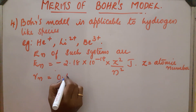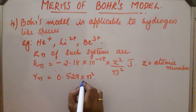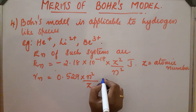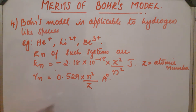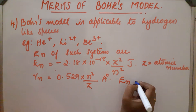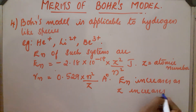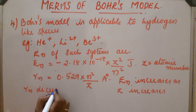Rn will be equal to 0.529 × N² / Z Angstrom. By using these two equations, we can calculate En and Rn for hydrogen-like species. As Z increases — atomic number increases — the radius decreases, meaning the electrons are more tightly bound. And the negative value of En increases, meaning more energy is released as Z increases, whereas Rn decreases as Z increases.